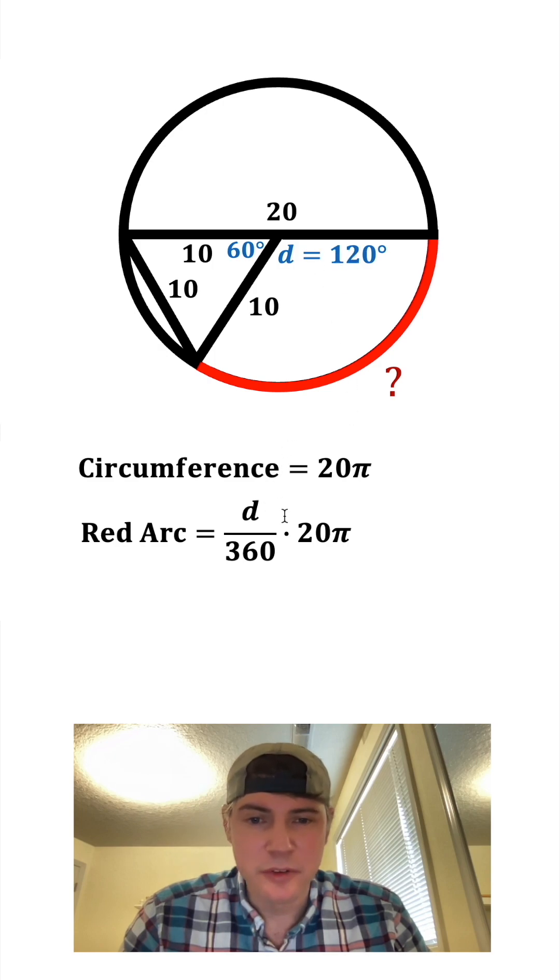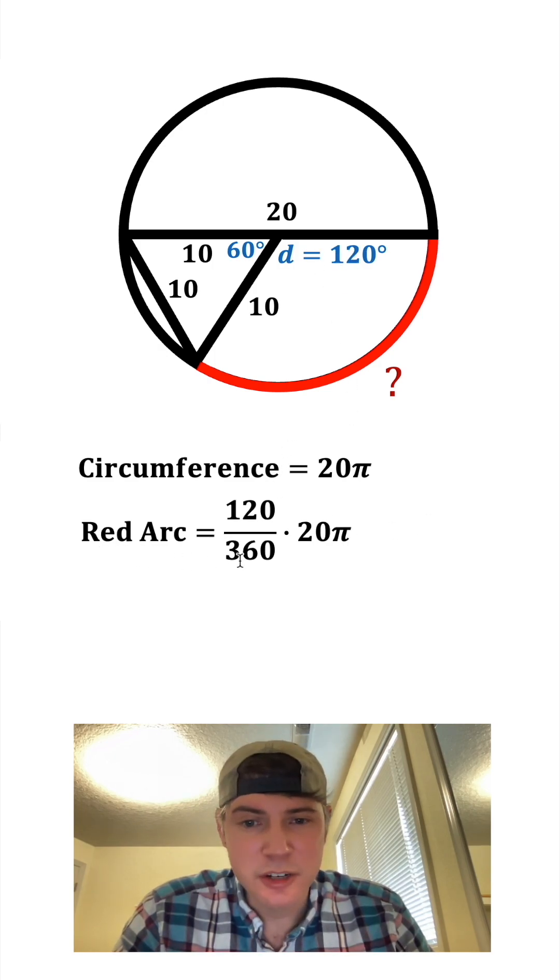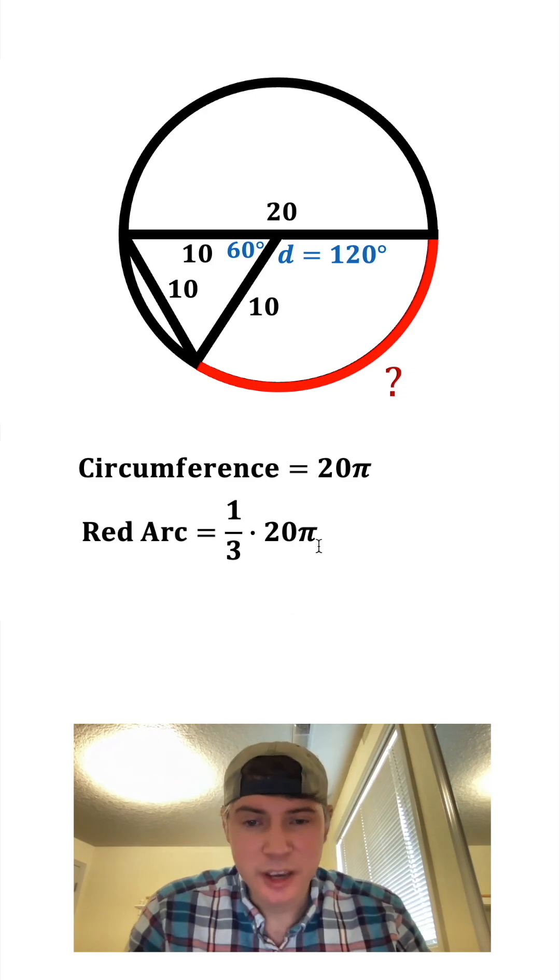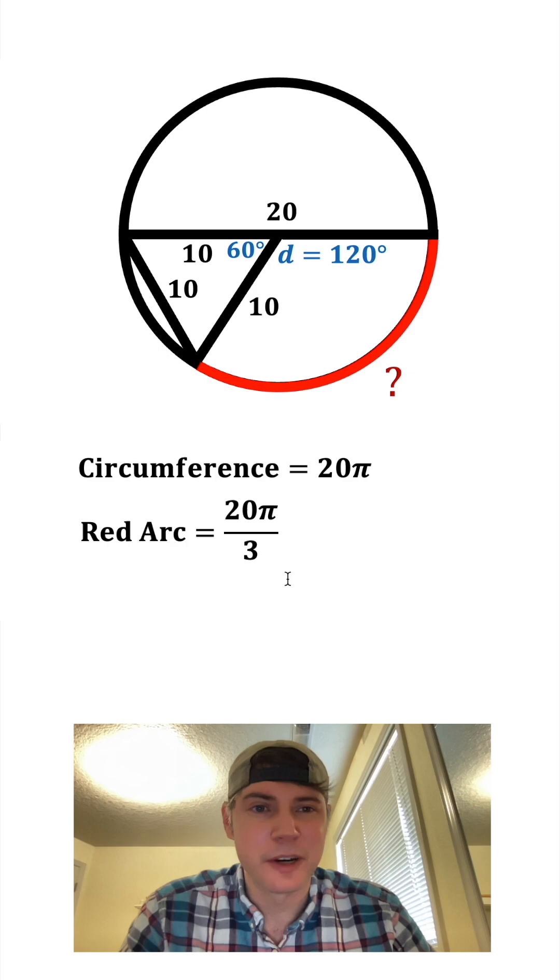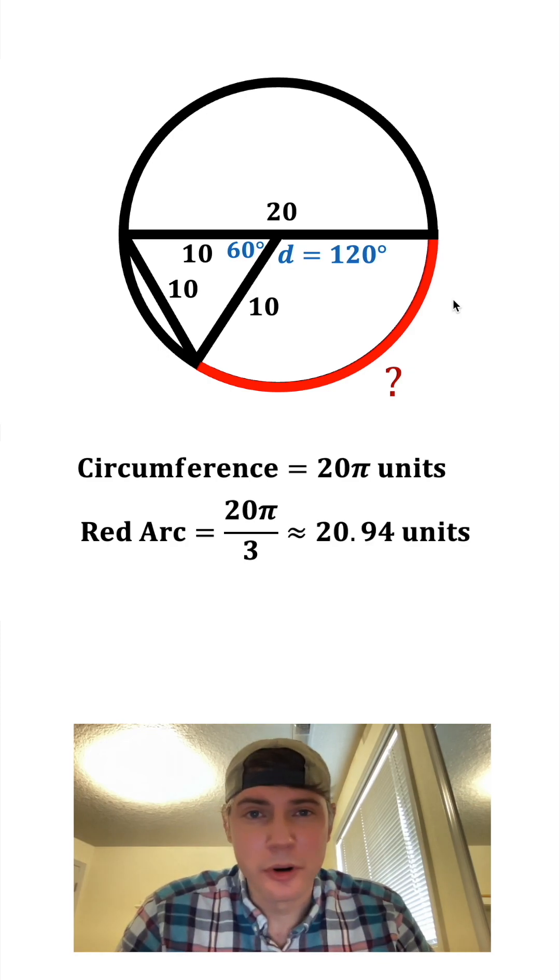So we can plug in 120 for this d right here. So the red arc is going to be this proportion of the entire circumference. 120 over 360 simplifies to one third and we can clean this up to be 20π over 3 and that's approximately 20.94 units. How exciting.